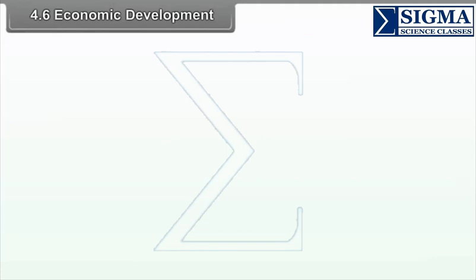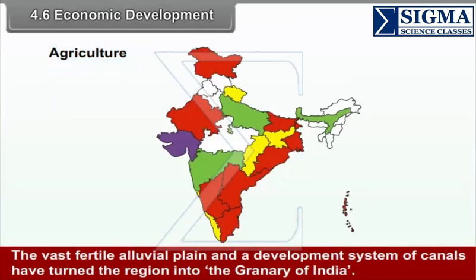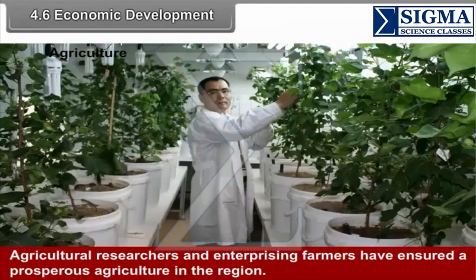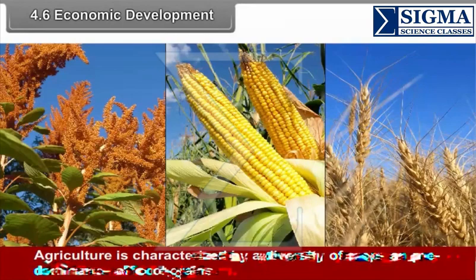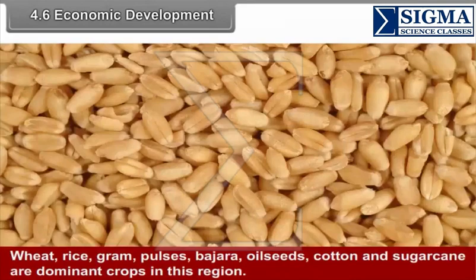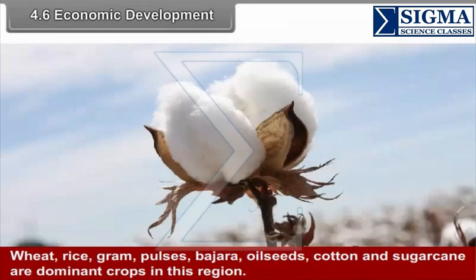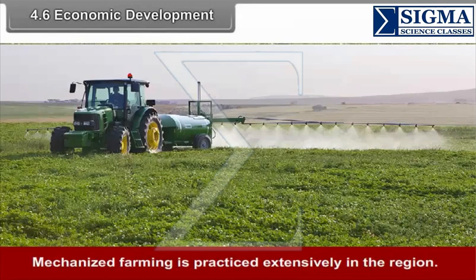4.6 Economic Development - Agriculture. The vast fertile alluvial plain and a developed system of canals have turned the region into the granary of India. The region produces a marketable surplus of food grains. Agricultural researchers and enterprising farmers have ensured prosperous agriculture. Agriculture is characterized by a diversity of crops and predominance of food grains. Wheat, rice, gram, pulses, bajra, oil seeds, cotton and sugar cane are dominant crops in this region. Mechanized farming is practiced extensively.